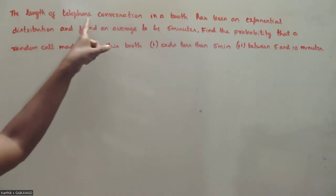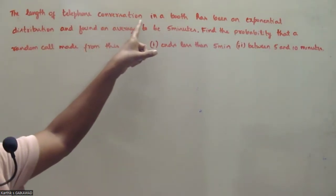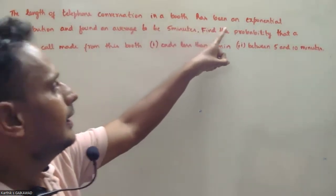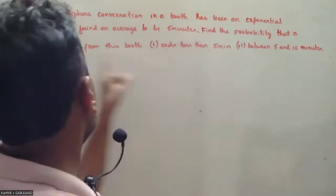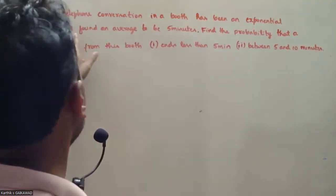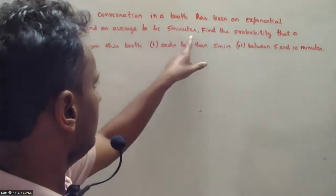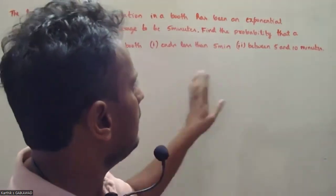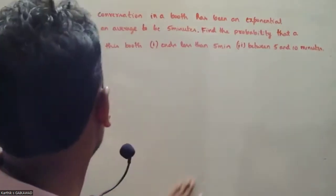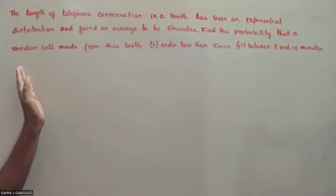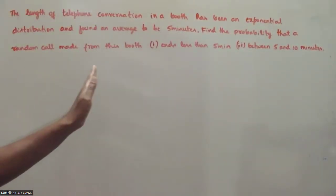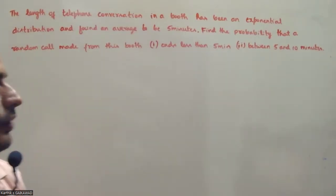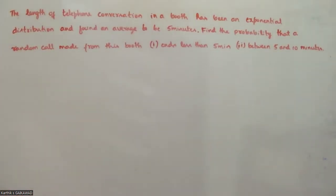The length of telephone conversations in a booth has an exponential distribution and is found to have an average of 5 minutes. Find the probability that a random call made from this booth ends in less than 5 minutes, and between 5 and 10 minutes.